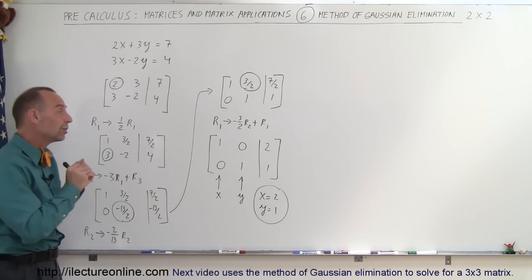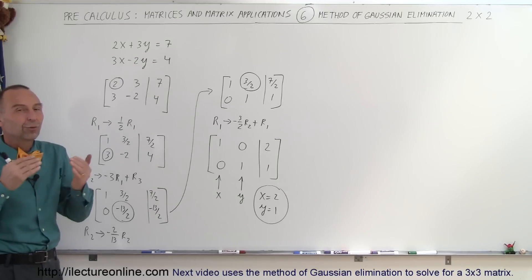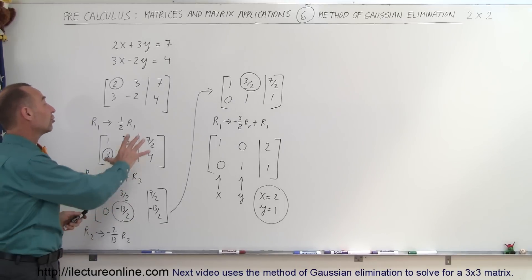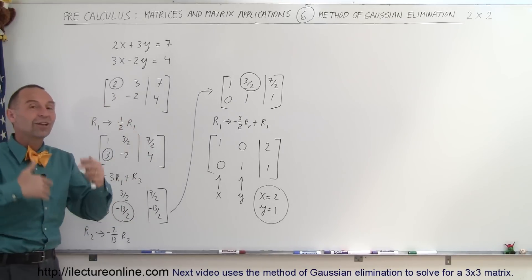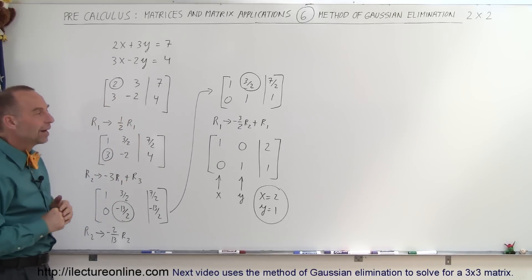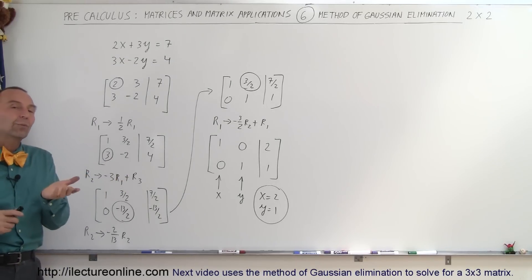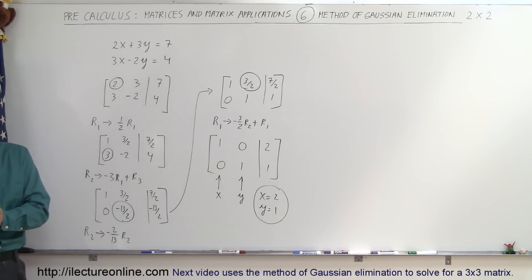However, learning this technique makes it really great, because once you start doing 3 equations and 3 unknowns, and 4 equations and 4 unknowns, it is a lot easier to use this technique than the algebraic technique. So here we can see how to do a 2 by 2 equation, and the next video we're going to do a 3 by 3 equation with 3 equations and 3 unknowns, to see how to use the method of Gaussian elimination. That's coming up next.